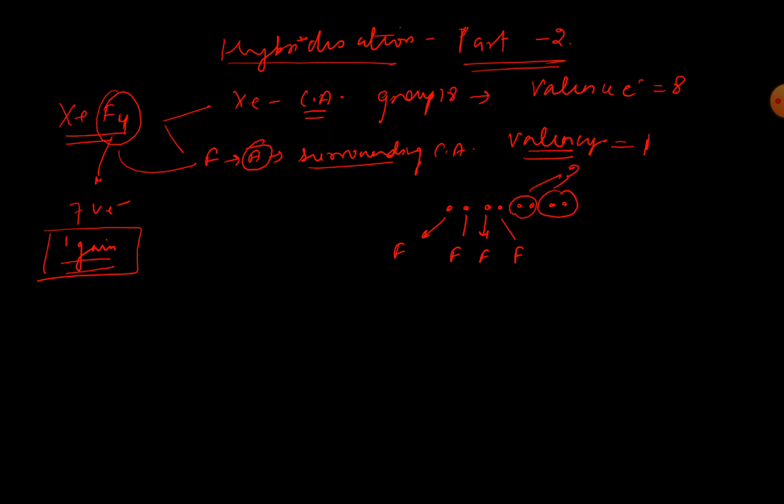We have got four fluorine atoms, and these are the two lone pairs of electrons. The pairs of electrons which are not involved in bond formation. Now if we count them, we are getting four bond pairs and we are getting two lone pairs.